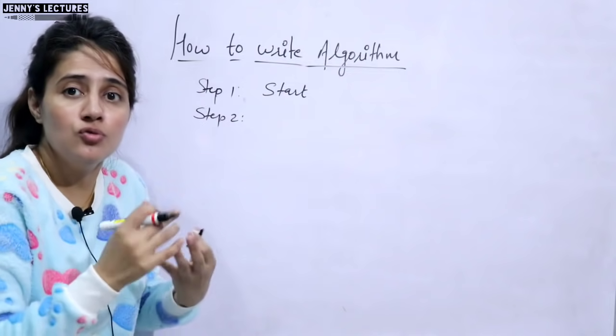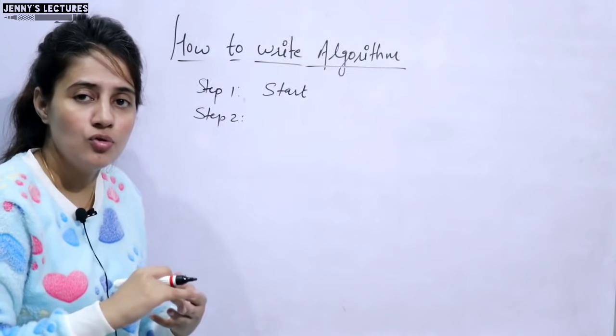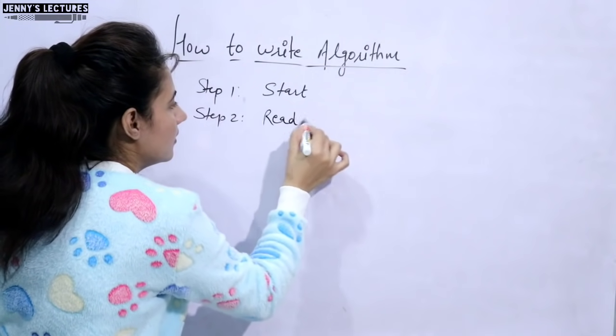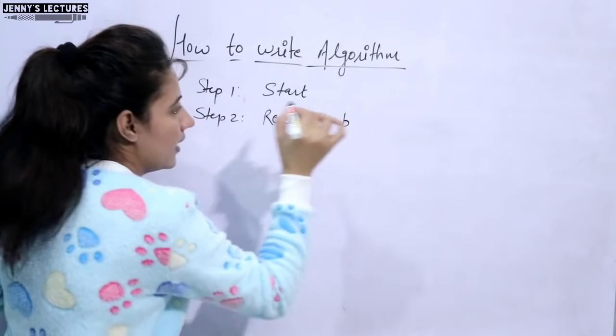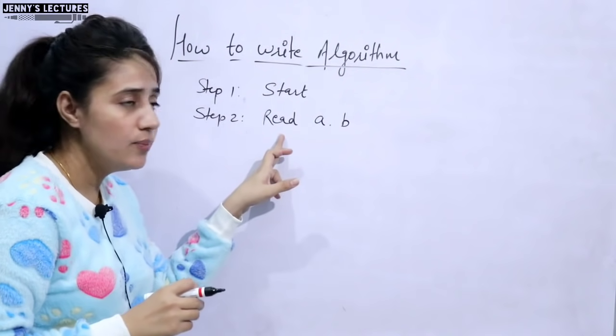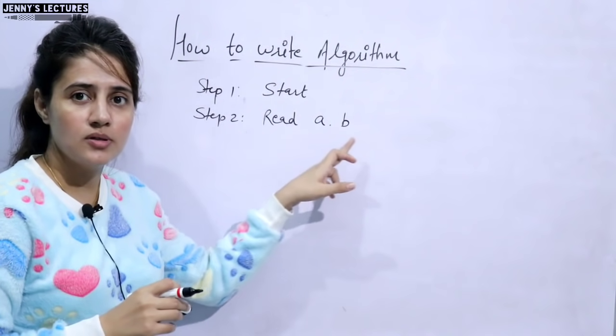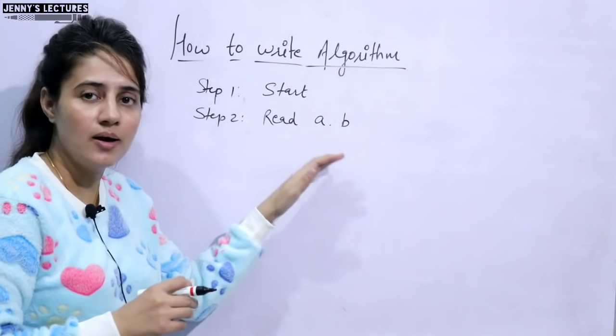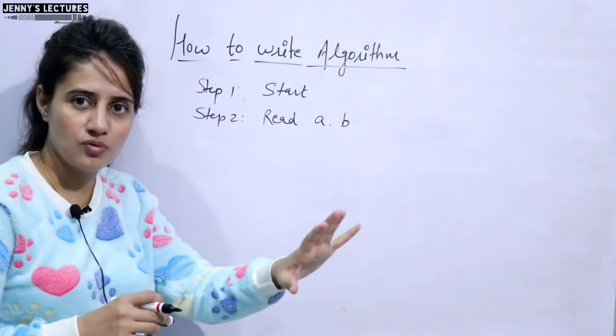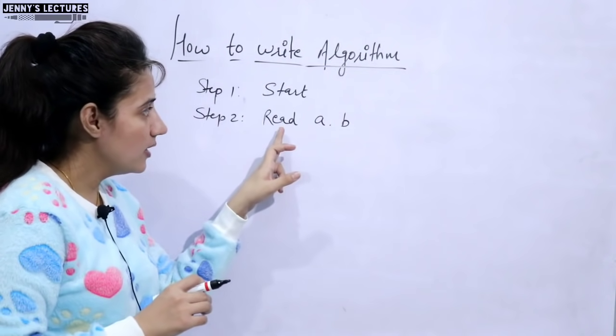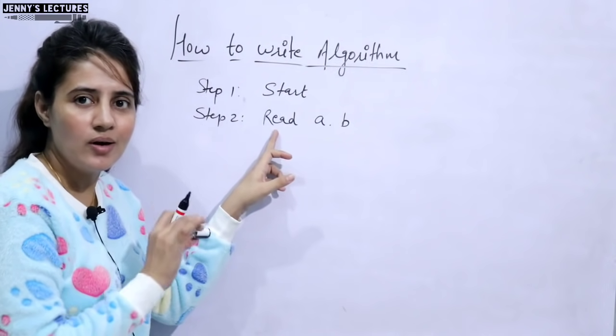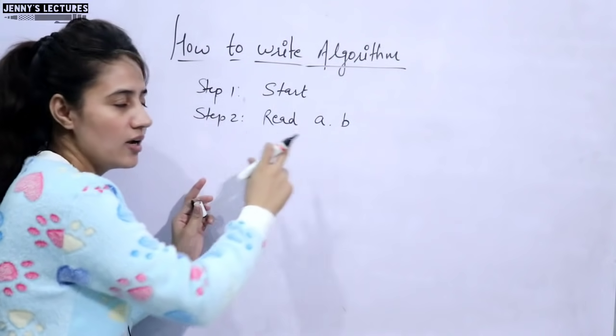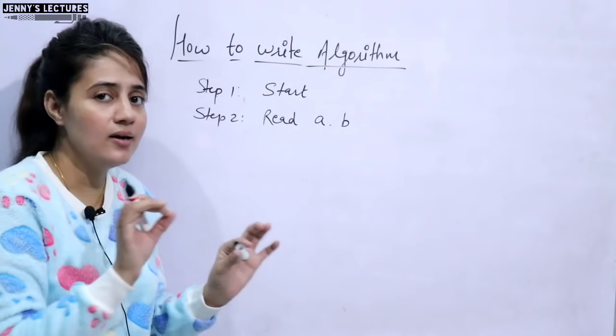Then step 2. Now for adding two numbers, you need two numbers, right? So you need input of two numbers. So here you can write read a and b, or you can write input two numbers a and b, or you can write enter a b, or enter num1 num2. It's up to you. But see here I'm writing either read or input or enter, but whatever I'm writing you are able to understand. That is the main thing.